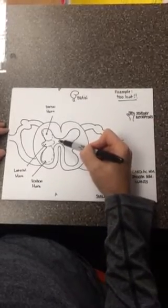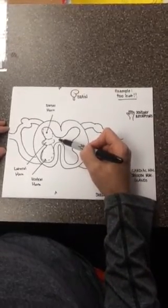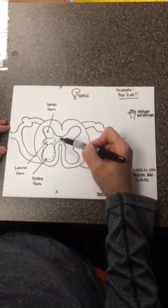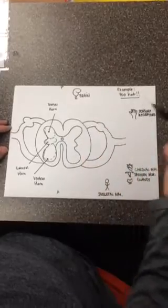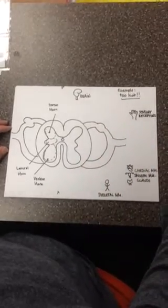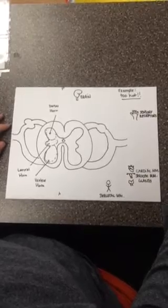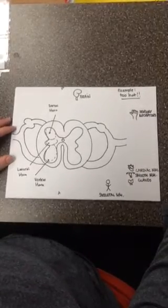In the gray matter, I also have my central canal. The purpose of this is to allow CSF, or cerebrospinal fluid, to flow up and down the center of the spinal cord. The CSF nourishes the cord, brings in oxygen and good nutrients, and takes away waste product.